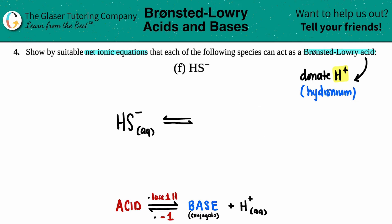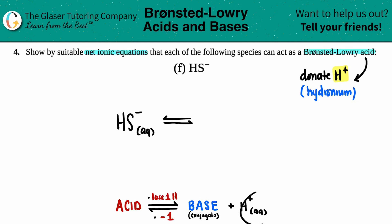Remember, the acid will always donate its one hydrogen, and that's represented by writing plus H⁺ on the product side. That means that you lost the one hydrogen that you had — this hydrogen that you had was the one that was donated.